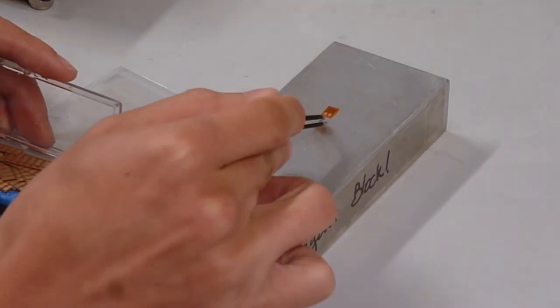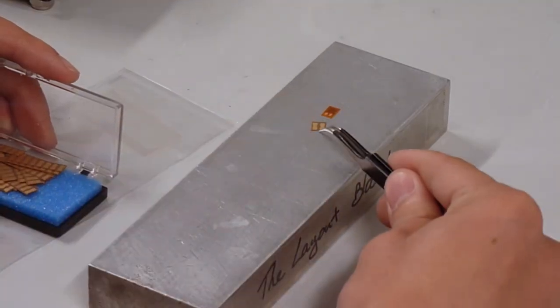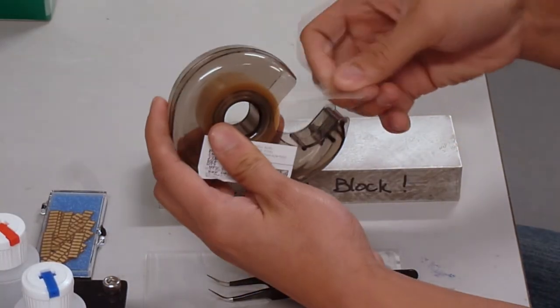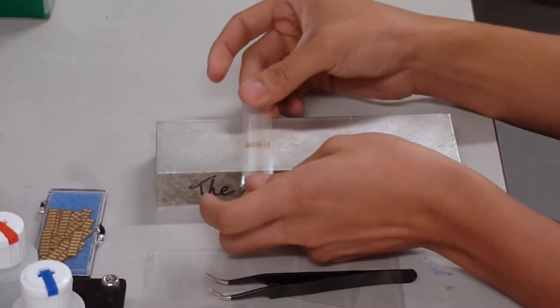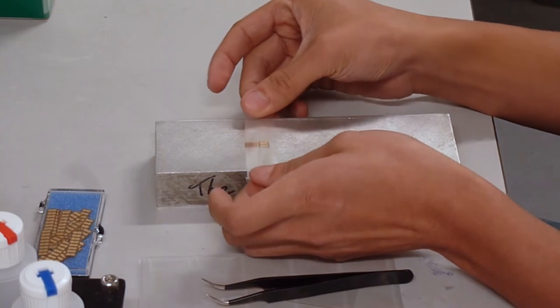Position a terminal pad beneath the gauge. Finally, remove a strip of cellophane tape and press down firmly over the gauge and terminal pad.